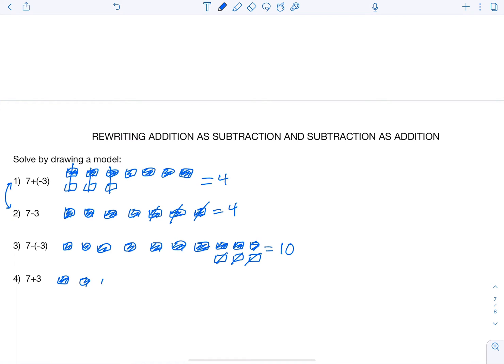If we add 7 plus 3, that's just 7 positives. 5, 6, 7. And we just add three more positives. 1, 2, 3. And so we can see that also equals 10, which again shows us that these two are linked.